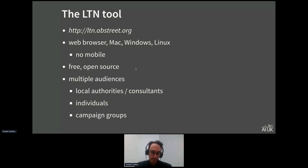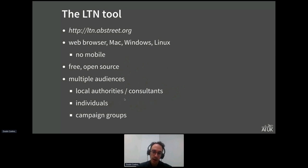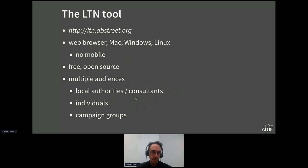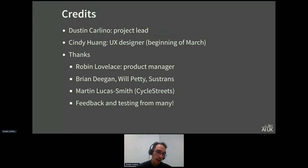The software is completely open source and free to use. People designing LTNs don't have tons of public funding, and what funding they do have needs to go towards physically making interventions — the software planning side should not be a barrier. The tool is meant for different groups: planners who design and communicate LTNs, and also residents who don't like a proposed scheme and want to come up with their own alternative. It works anywhere in the world thanks to OpenStreetMap data, with an import process for areas not already included.